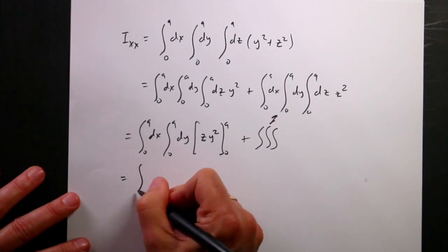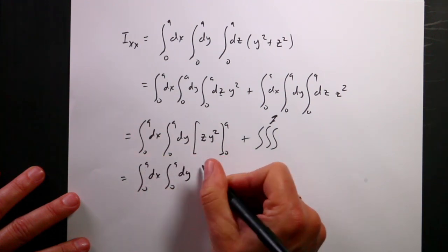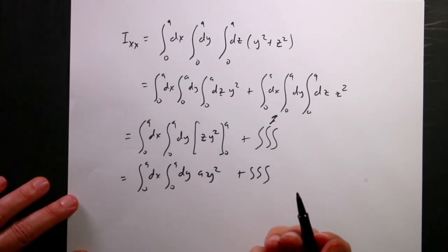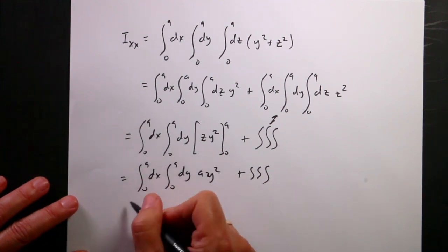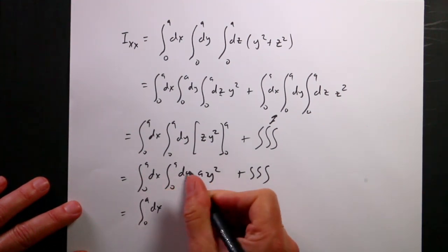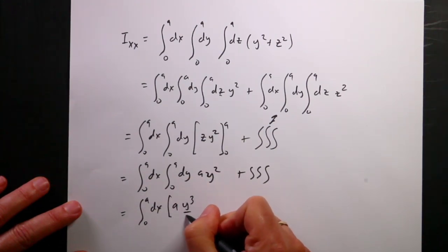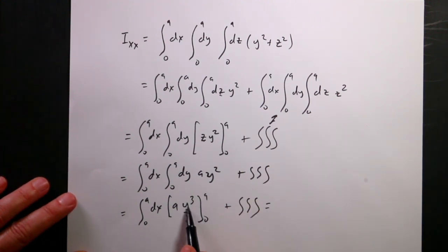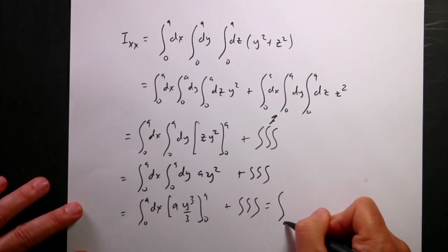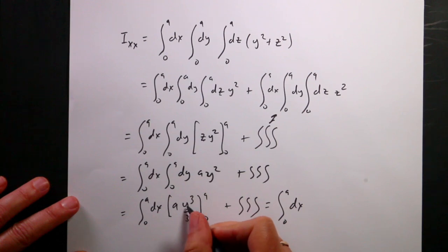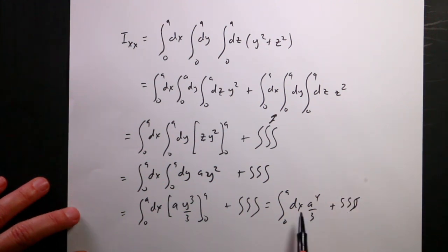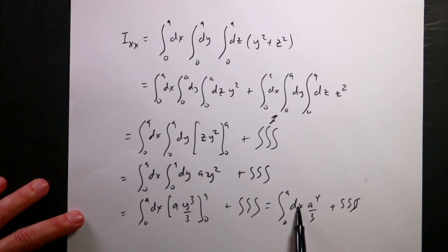So now I integrate a·y² over dy from 0 to a. Using the power rule, that's a·y³/3 evaluated from 0 to a, giving a⁴/3. Then integrating over dx from 0 to a just multiplies by a, so I get a⁵/3.